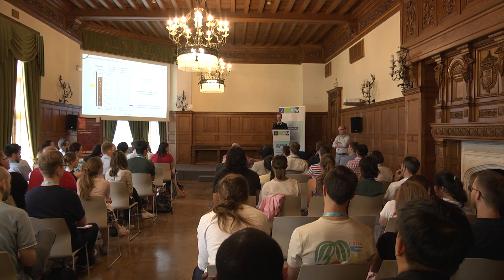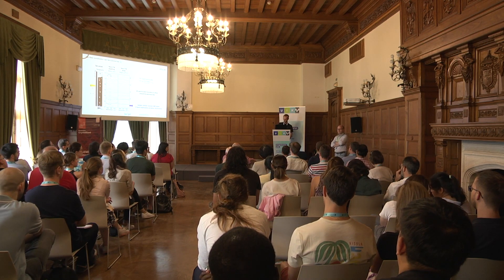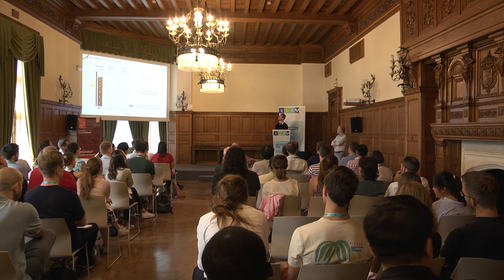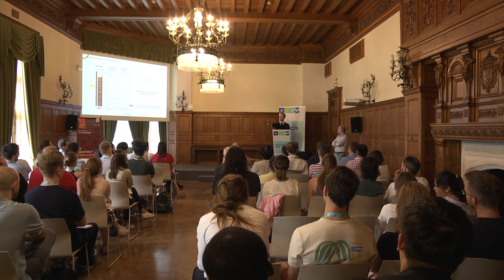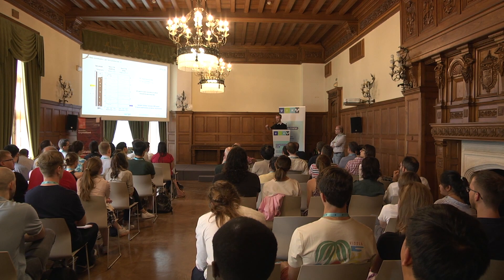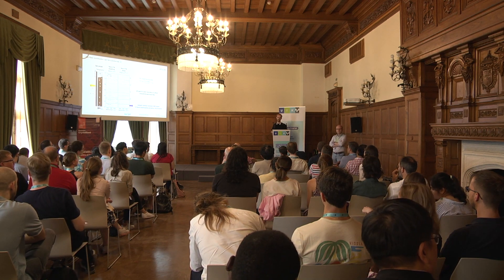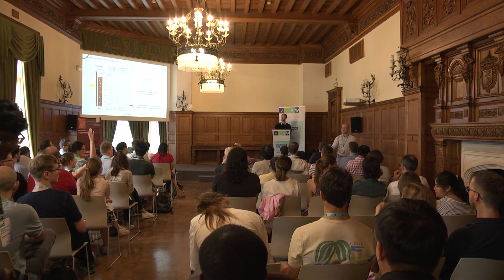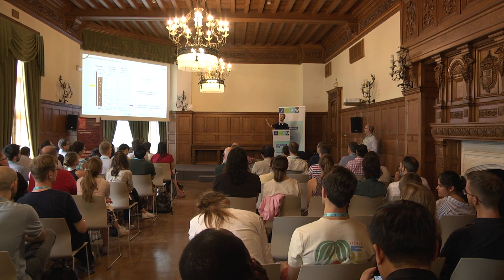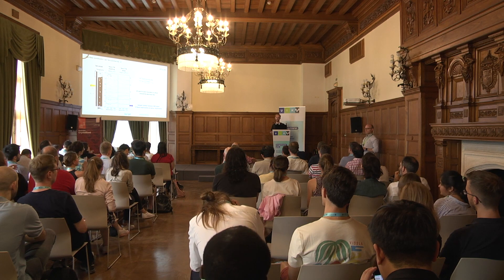Question: does it matter which harmonics are used for the normalization? Do you have recommendations on which to use and which to avoid? Answer: I recommend dividing a higher one by a lower one, because then the peaks are still peaks and not dips. I always recommend as high demodulation orders as possible where the signal-to-noise is good enough, because lower demodulation orders may have some background contamination. I always divide third by second, or fourth by third — but you can also skip one of the harmonics and divide fourth by second, or any combination of harmonics.